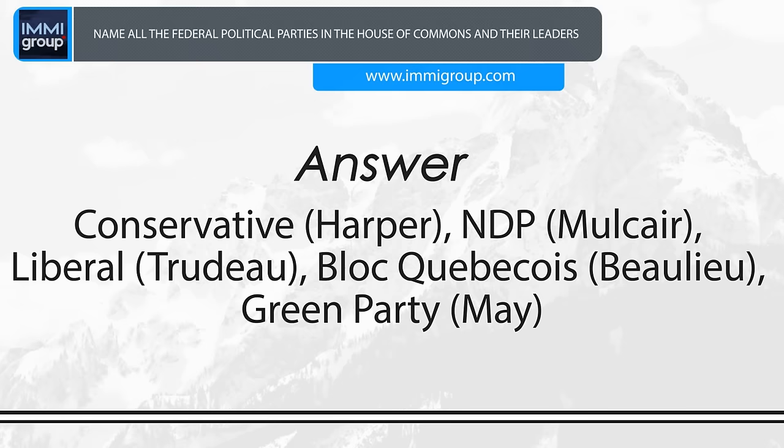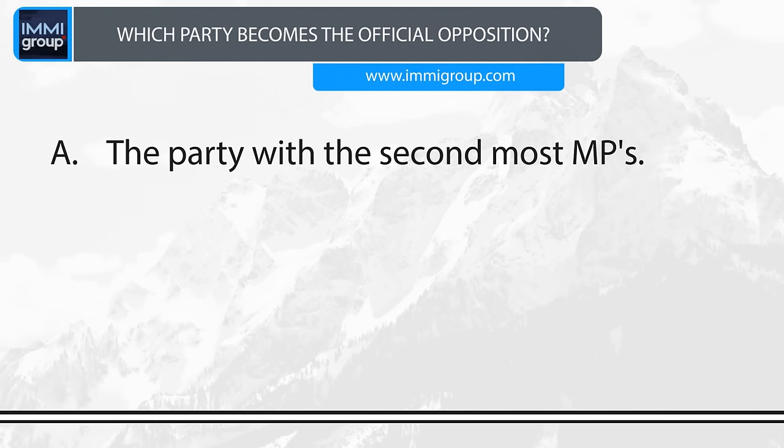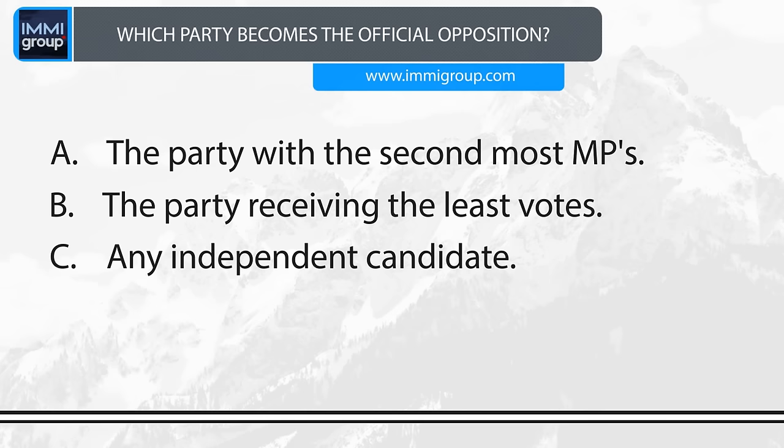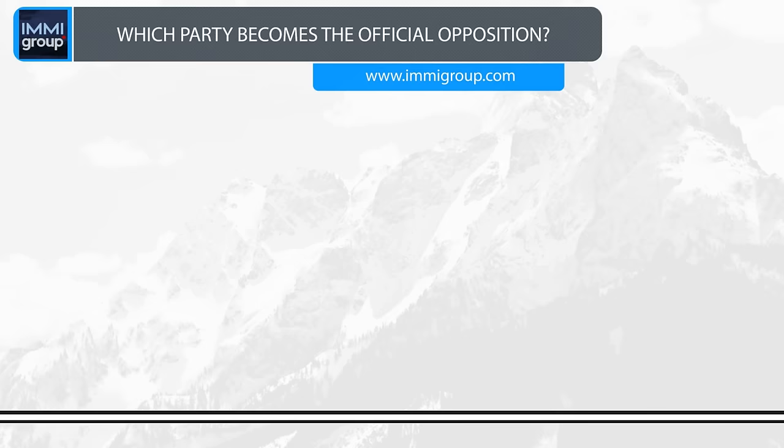Which party becomes the official opposition? A. The party with the second most MPs. B. The party receiving the least votes. C. Any independent candidate. D. The party the Prime Minister selects. Answer: The party with the second most MPs.